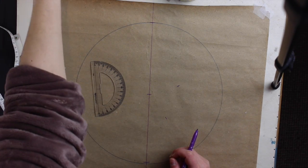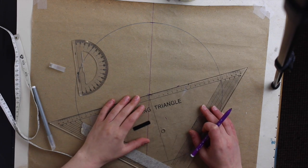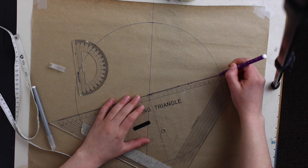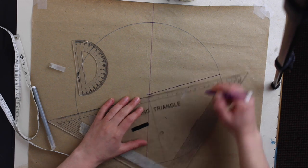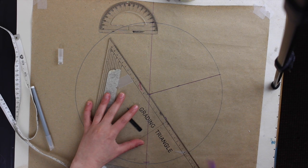Now we're going to connect each marking with the center front of our circle, and we're going to extend that line all the way to the edge of the circle. Just like so. And you're going to see the star starting to appear very soon.